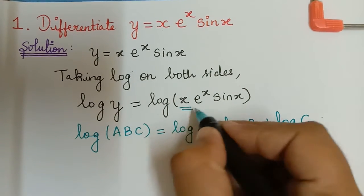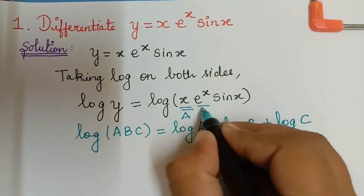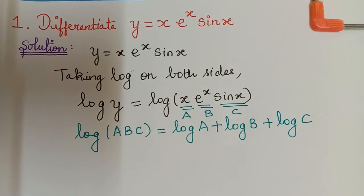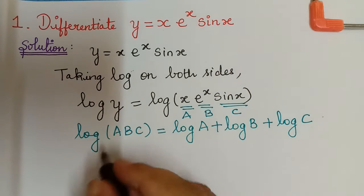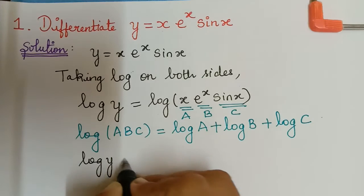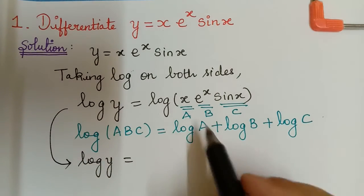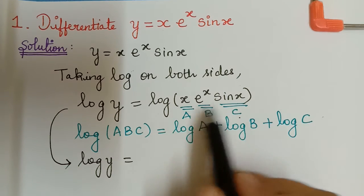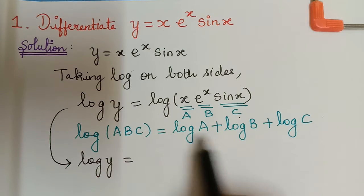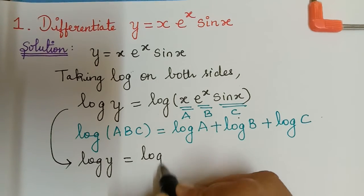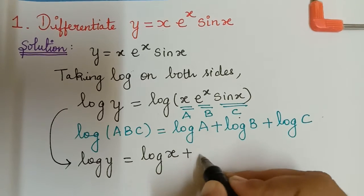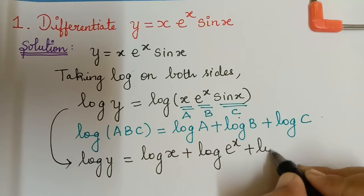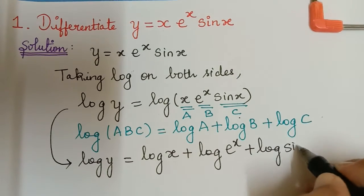Here a is considered to be x, b is e power x, and c is sin x. So log y will be equal to log x plus log e power x plus log sin x.